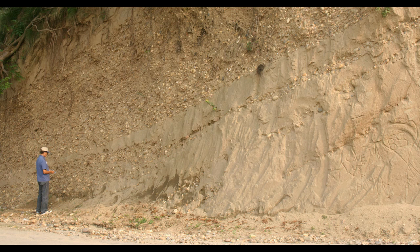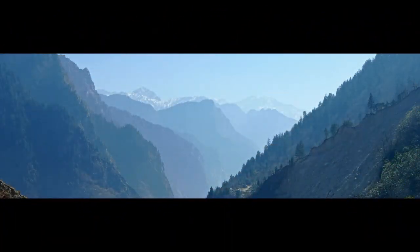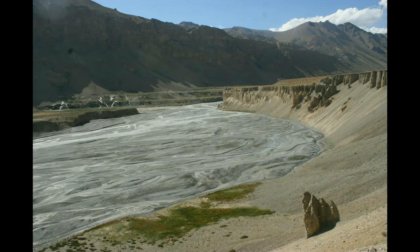These sediments, particularly the tertiary sediments of the Sivaliks, have their sources in the higher Himalaya. When the Himalayan orogeny was taking place, the rivers emerging from the Himalaya were bringing sediments from the higher and lesser Himalaya and deposited them along the east-west axis of a trough created along its course.